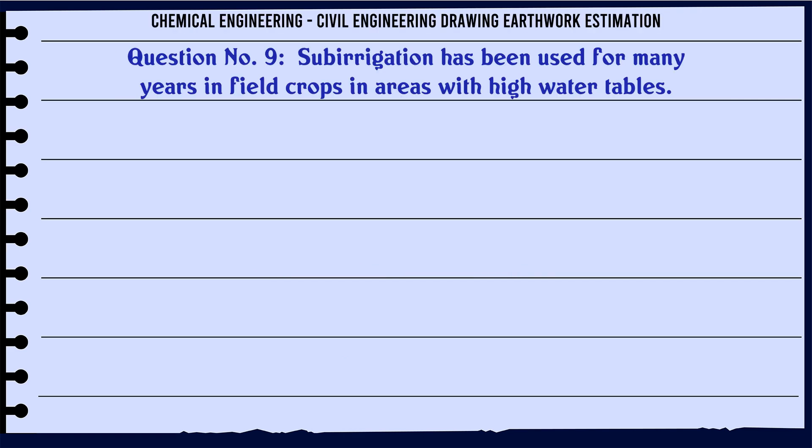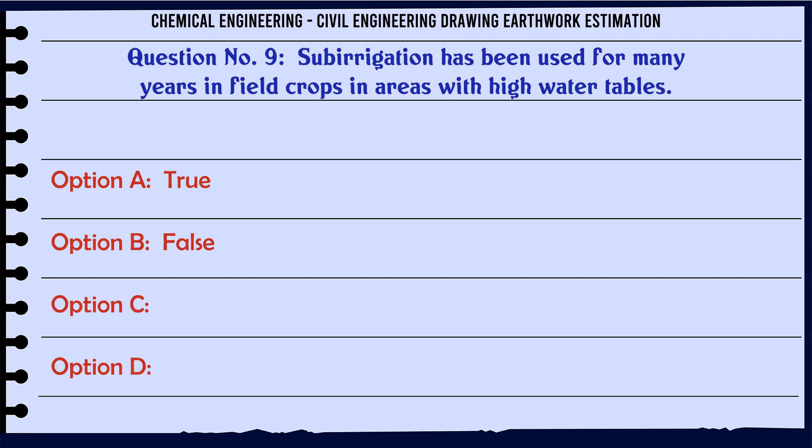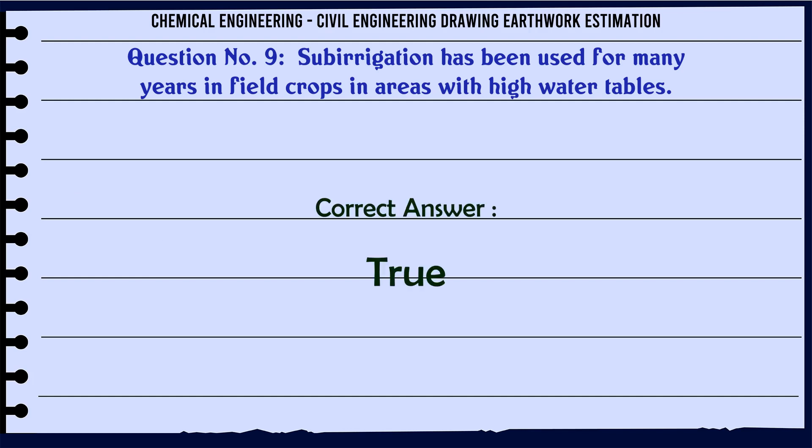Subirrigation has been used for many years in field crops in areas with high water tables. A. True. B. False. The correct answer is: True.